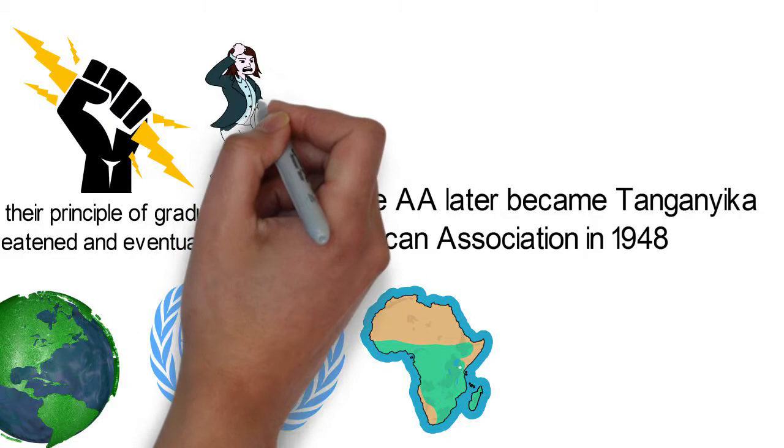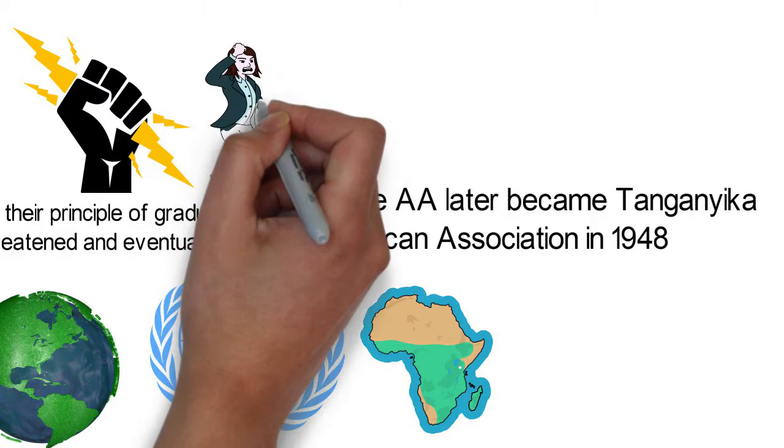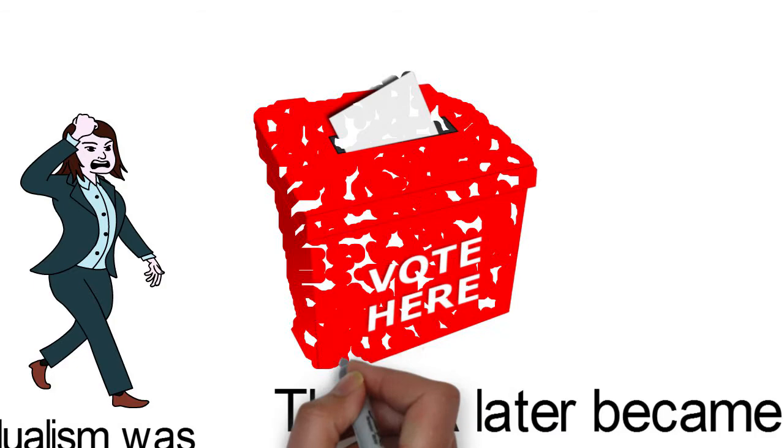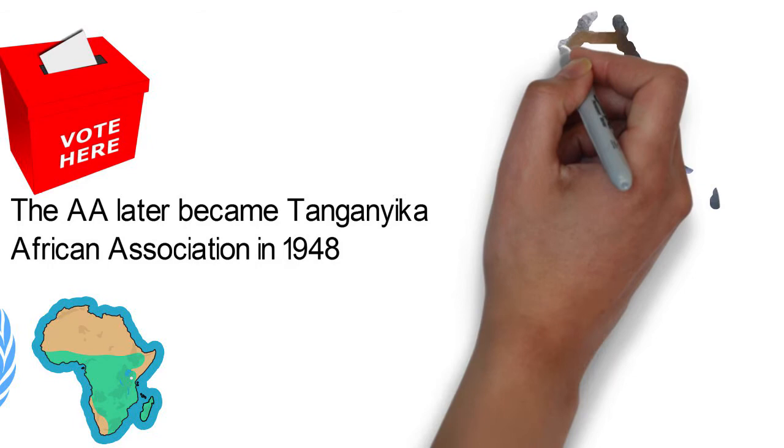In 1954, African Nationalism increased through the Tanganyika African National Union, a political organization formed by Julius Nyerere. TANU succeeded the TAA and won the Legislative Council elections in 1958, 1959, and 1960, with Nyerere as chief minister after the 1960 election.